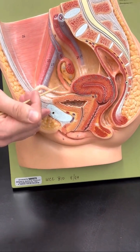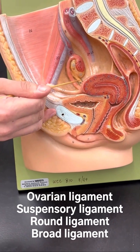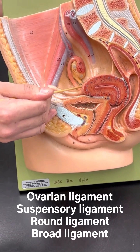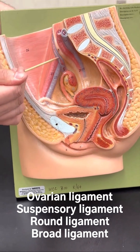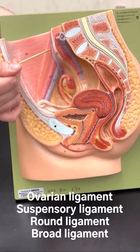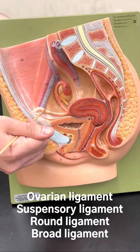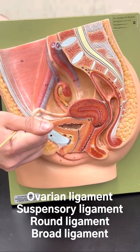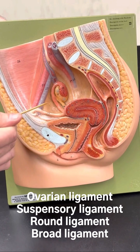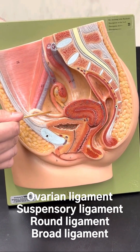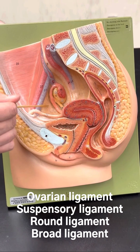Next, for ligaments, we first have the ovarian ligament, then we have the suspensory ligament, and then we have the round ligament. And then this entire structure would be the broad ligament.